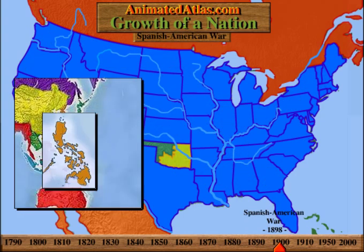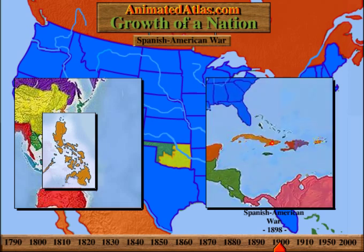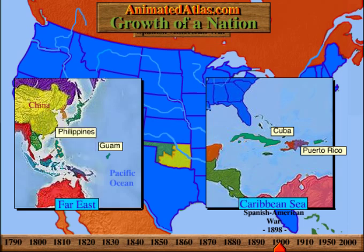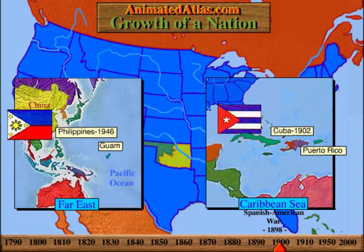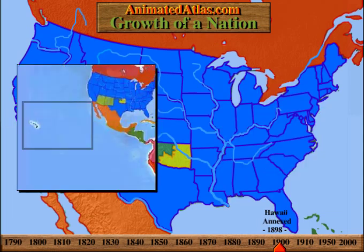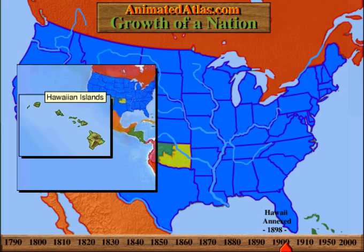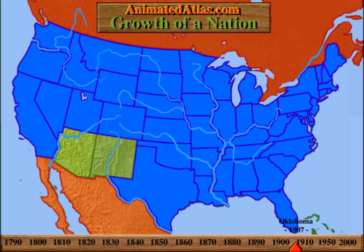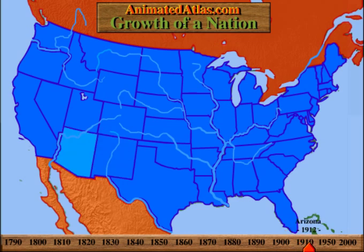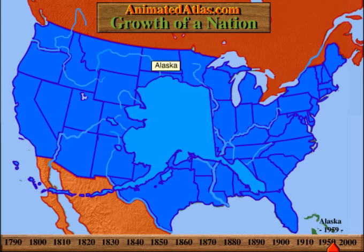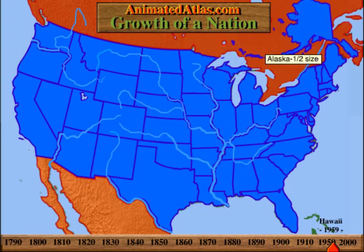In 1898, America defeated Spain in her shortest declared war. The U.S. obtained Cuba and Puerto Rico in the Caribbean and Guam and the Philippines in the Far East. Cuba was given her independence in 1902 and the Philippines in 1946. In 1898, the Hawaiian Islands in the Pacific were annexed. Oklahoma was admitted as a state in 1907, including the Indian Territory. In 1912, New Mexico and Arizona were admitted, completing the 48 contiguous states. In 1959, Alaska and Hawaii were admitted, completing the growth of the nation with 50 states.